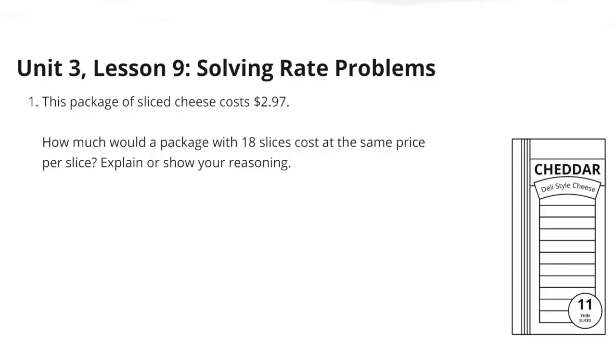Unit 3 Lesson 9 Solving Rate Problems 1. This package of sliced cheese costs $2.97. How much would a package of 18 slices cost at the same price per slice? Explain or show your reasoning.